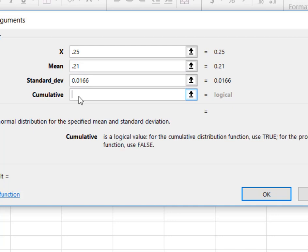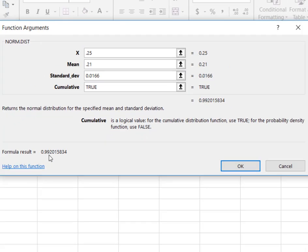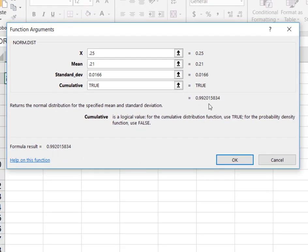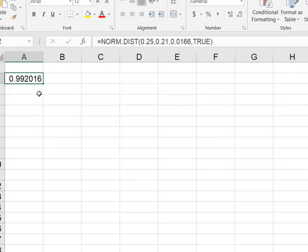And now the last thing it wants to know is, do I want this to be cumulative? And I want everything. I want the whole area under the curve. So my answer here is going to be true. So what you'll see is it'll give you the formula result here and up here. But I'm going to hit OK, because that's going to give it to me in a cell, in Excel.